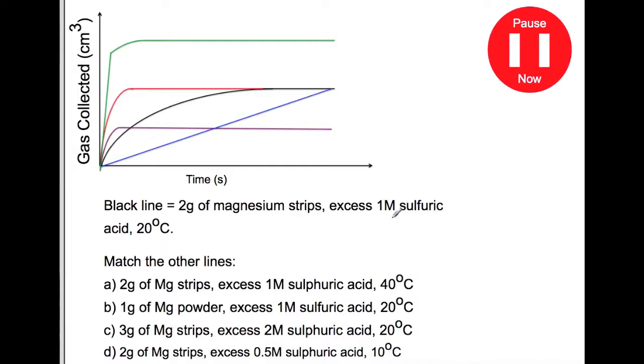So almost the same conditions as the black line. The only thing we've changed is the temperature so it'll be faster but it'll still produce the same amount of gas so that one would be the red line.